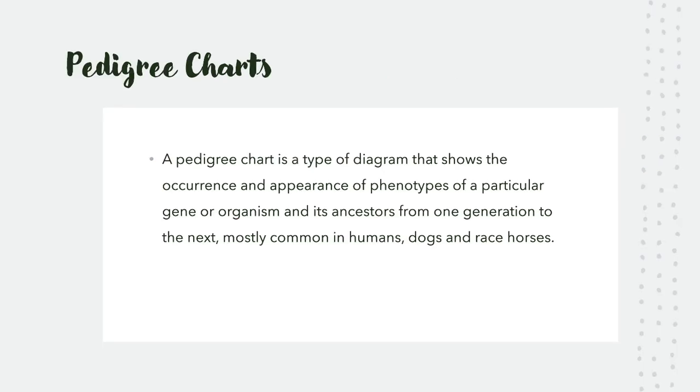A pedigree chart is a type of chart that shows an occurrence and appearance of phenotypes of a particular gene or organism and its ancestors from one generation to the next, mostly common in humans, show dogs, and racehorses. Basically, if you want to discover your heritage or your background, maybe you should create a family - how your ancestors are related to you. That's how you could do it, through a pedigree chart. Or if you want to create a family tree, you can use a pedigree chart. There's websites that you could do it on, or you can hire a genealogist.